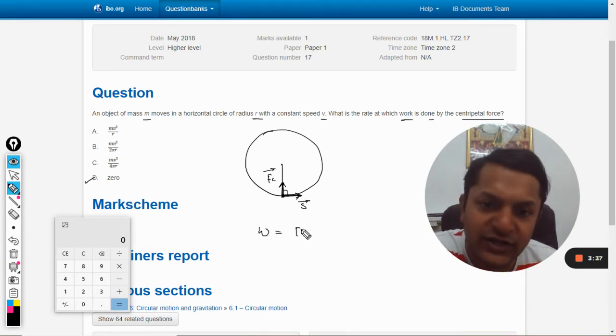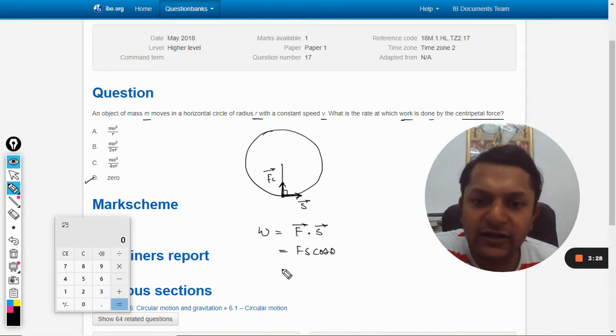Now in such cases, what will be the work done? Work is, we know, the dot product of these two vectors, which is F into S cos theta. When we substitute the angle 90 degrees here, we all know that cos 90 is zero.